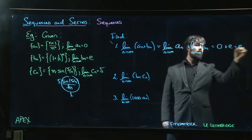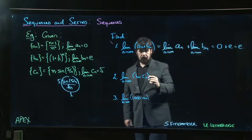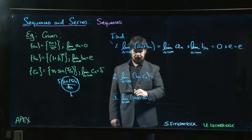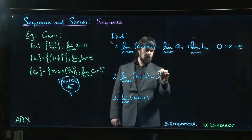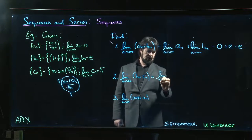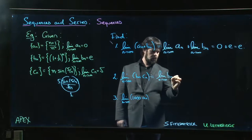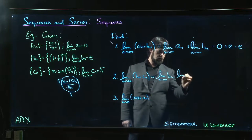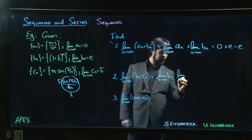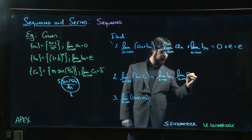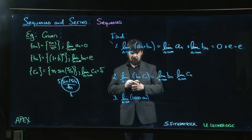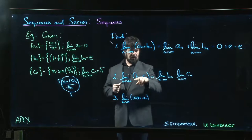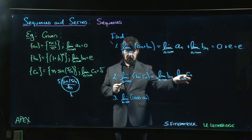Similarly here we have a product. Limit of a product is product of the limits, as long as these two limits exist independently. We can have situations where this limit does exist but these limits don't, and then you got to be a bit more careful.